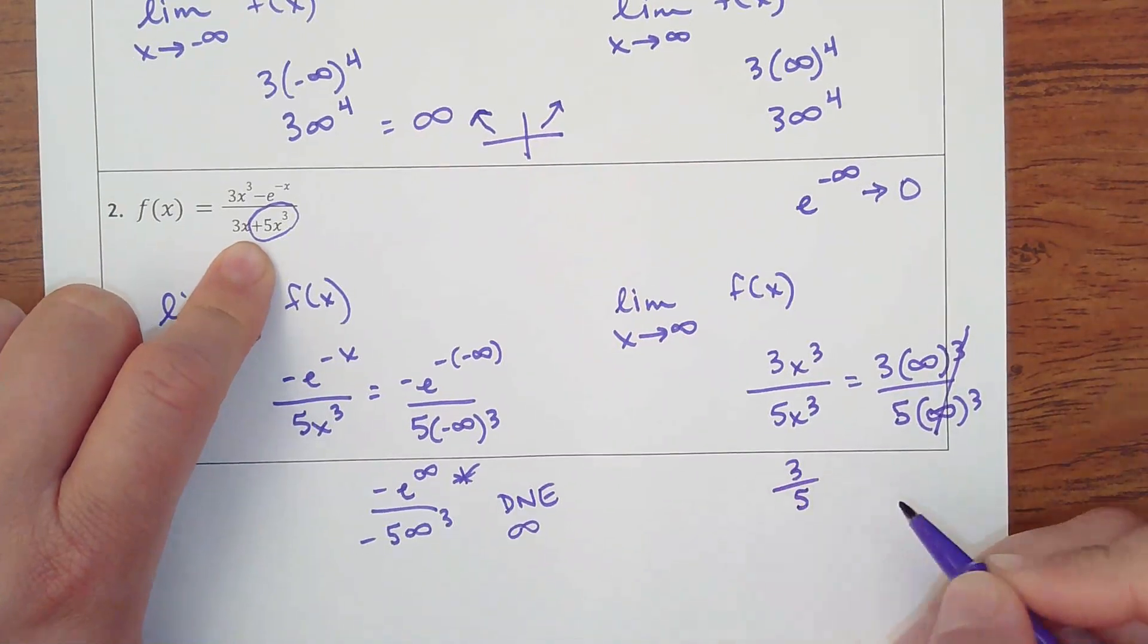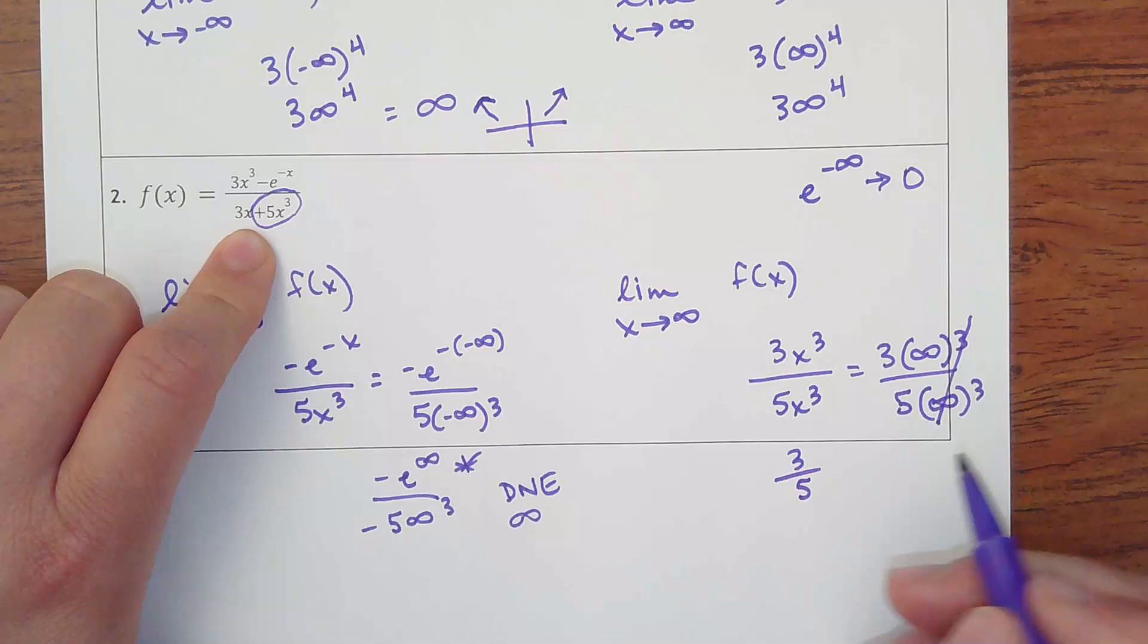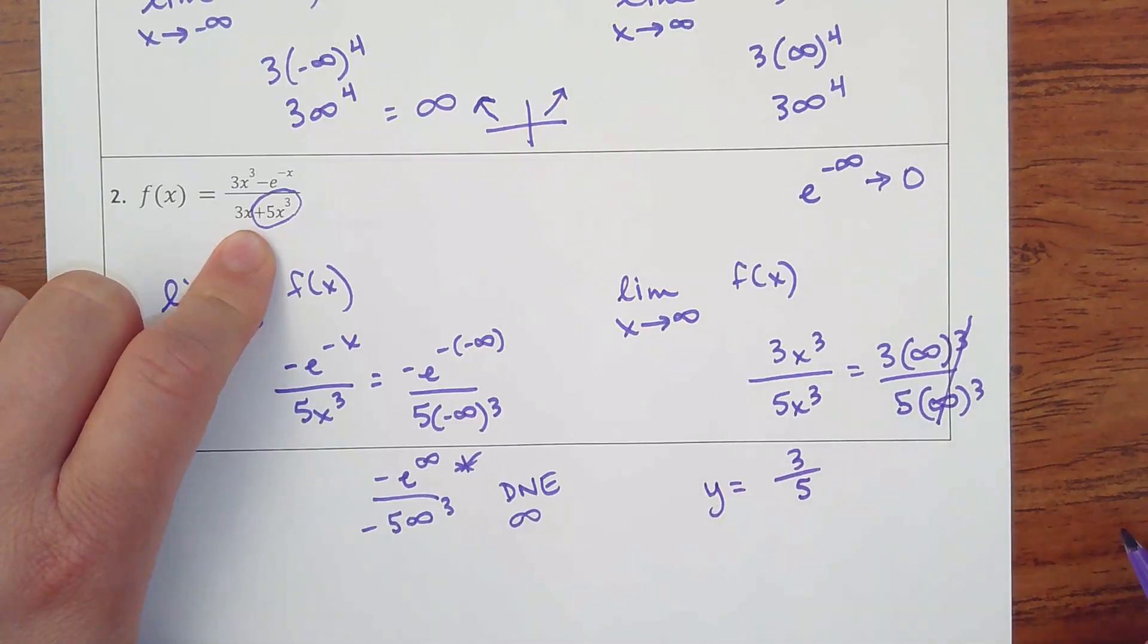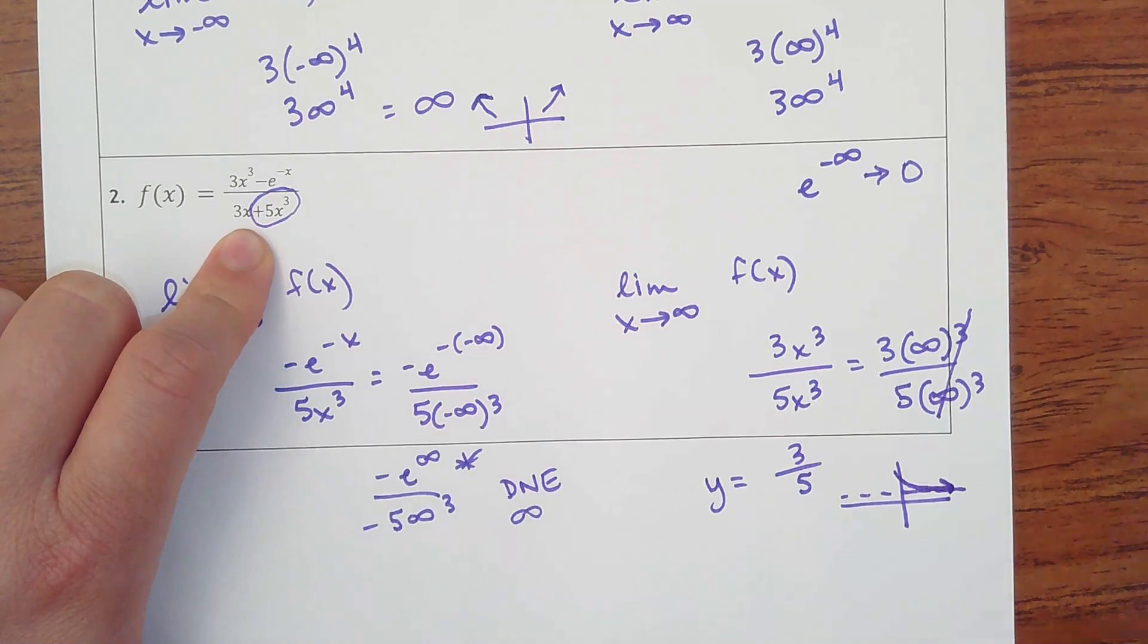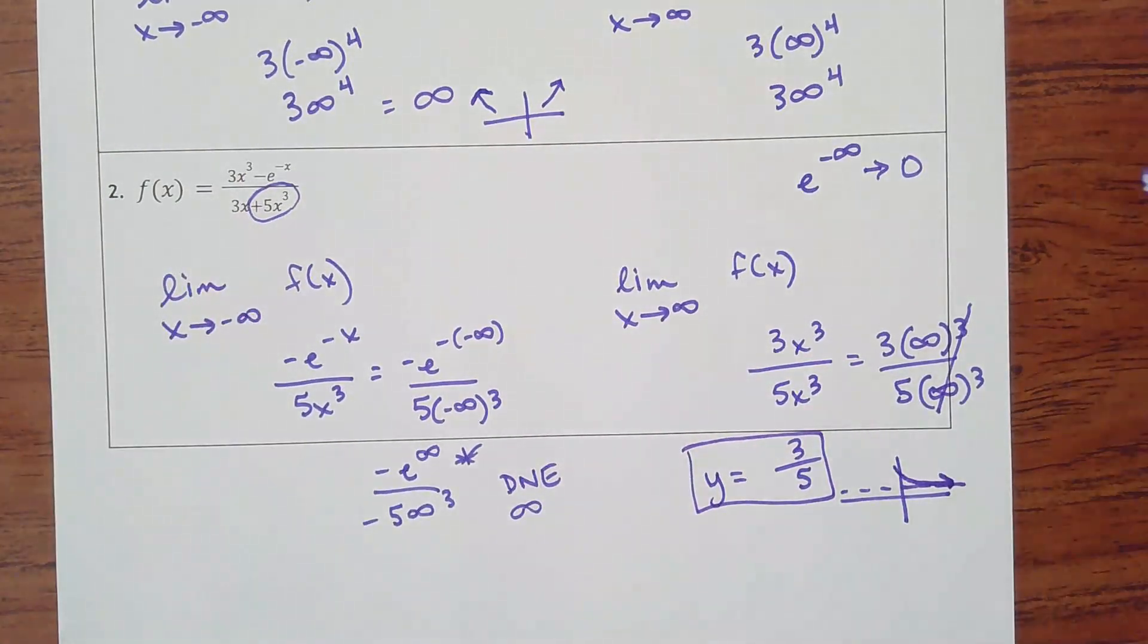You can't just put in 3 fifths because it asks for the equation. So it wants y equals 3 fifths. As x is getting bigger, my function is coming down something like that and making a horizontal asymptote at y equals that value. So that one only has one horizontal asymptote.